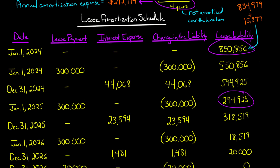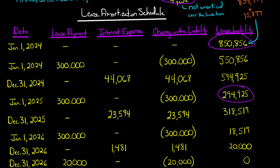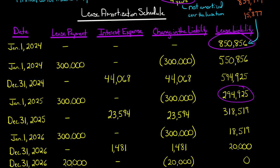Now here's what's different when there's a bargain purchase option. If you go back to the video where there was no bargain purchase option, all the numbers were the same but the interest expense was lower — because having the bargain purchase option increased the lease liability, which means there's going to be more interest expense. It also means that in the final period of the lease, there's going to be interest expense accrued there as well. When there's no bargain purchase option, the final lease payment extinguishes the liability so there's no interest incurred in the final year. But when you have a bargain purchase option, there's going to be interest accrued in that final year of the lease.